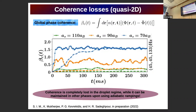An audience member suggests that maybe instead of global phase coherence one could look at the supersolid fraction, and whether one could monitor how this evolves or essentially destroy it. This is acknowledged as a good suggestion — the connection between coherence and the supersolid fraction has not been computed yet, but it can be done.